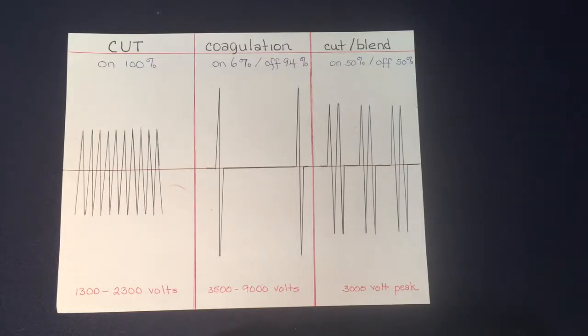As it cools, that heat instead of being vaporized by the cell is going to be transmitted to the adjacent tissues, so you get more collateral damage with coagulation when you use that.